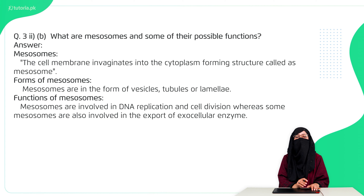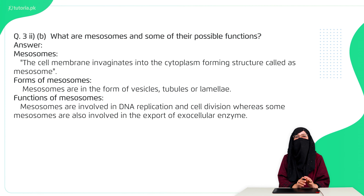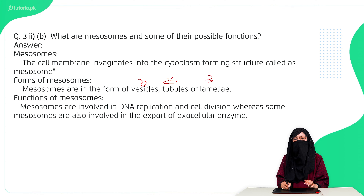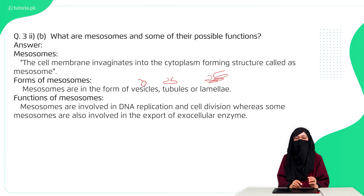The next question: what are mesosomes and some of their possible functions? Mesosomes are infoldings of the cell membrane. They can exist in the form of vesicles, tubules, or lamellae. Vesicles are sac-like forms, tubules are tube-shaped, and lamellae are extension-like leaf-shaped structures. Their functions include DNA replication and certain respiratory enzyme activities.